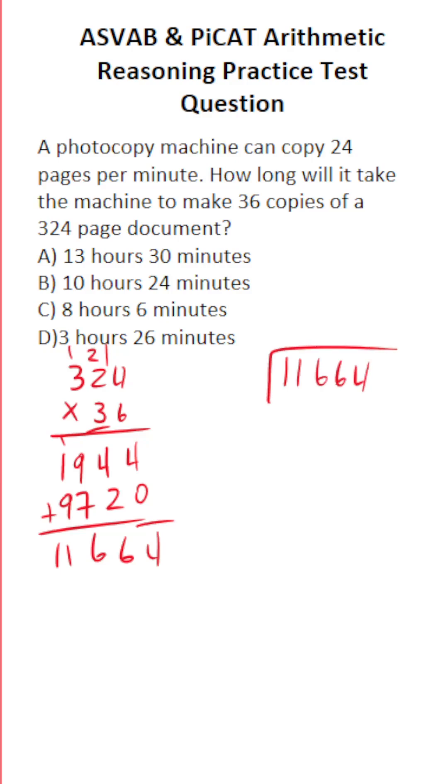And again, this machine copies at a rate of 24 pages per minute. So by doing 11,664 divide it by 24, we'll know how many minutes it's going to take to make these photocopies.